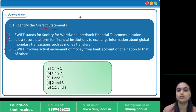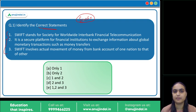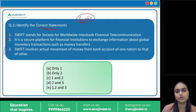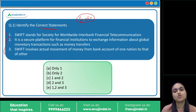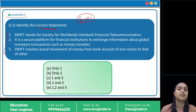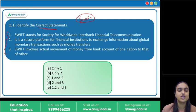The first question asks to identify the correct statements about the SWIFT payment system. You would be aware of the Russia-Ukraine situation, because of which some banks of Russia have been excluded from this payment system. We'll discuss what SWIFT is, how it works, the impact of excluding some Russian banks, how it impacts Russia, and what its impact will be on India.